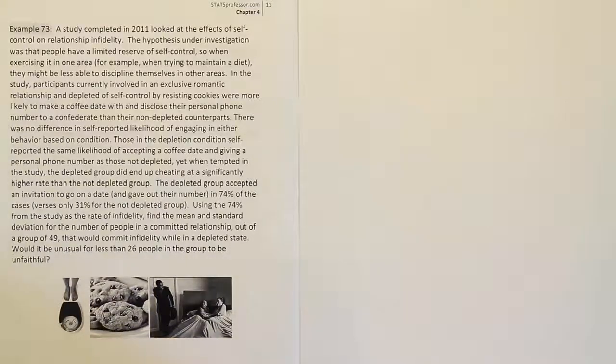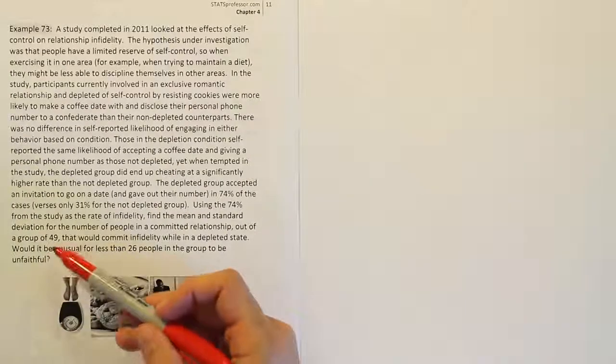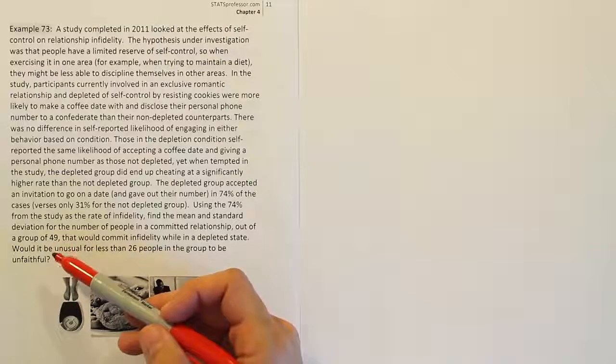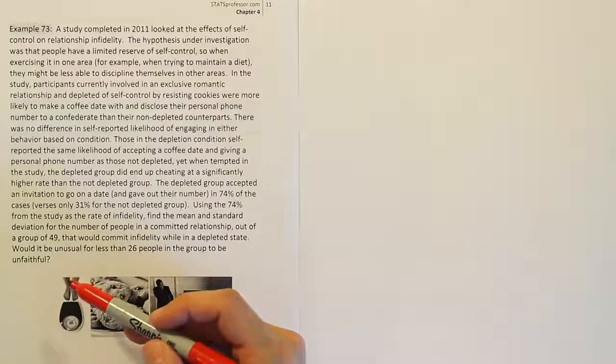I believe it's binomial, right? And the reason why is because there's clearly a fixed number of trials. We're going to be looking at 49 people, right? Secondly, there's going to be either success or failure. Either the person is unfaithful or they're not, right?